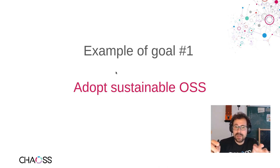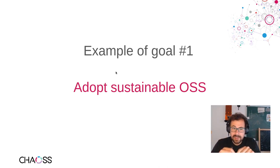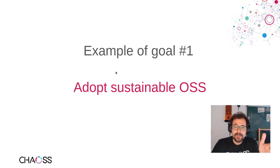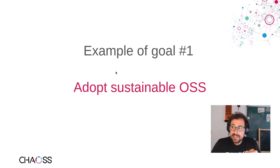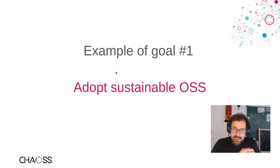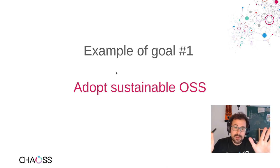So the goal for our example is: we want to adopt sustainable open source and find out if a project is healthy. Some of the questions we may have: Do you expect this project to be maintained in the next two years? Is it maintained by a single maintainer? Is it maintained by a single company? This is very relevant — if a library is critical and is maintained by a single person, the organization should be aware that if that person quits, most of the maintenance activity is gone.